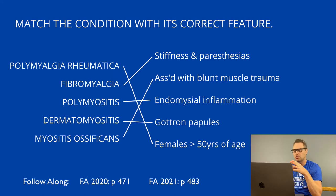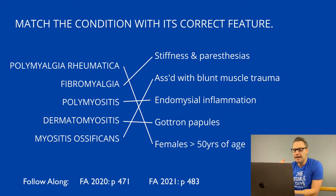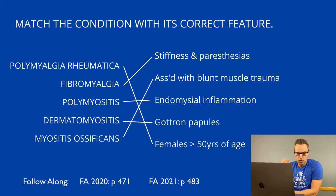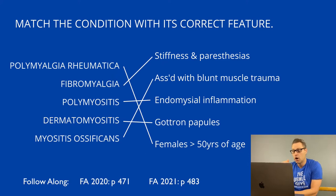Dermatomyositis is associated with an increased risk of occult malignancy. Finally, myositis ossificans is a benign condition characterized by heterotopic ossification involving skeletal muscles and associated with blunt muscle trauma. It is identifiable by the presence of a soft tissue mass and, on imaging, eggshell calcifications. On histology, look for metaplastic bone surrounding areas of fibroblastic proliferation.